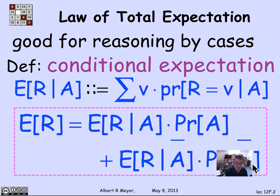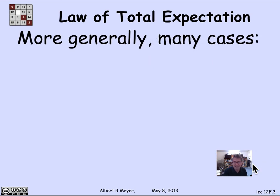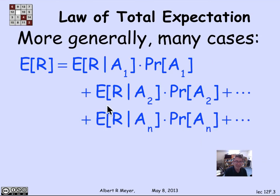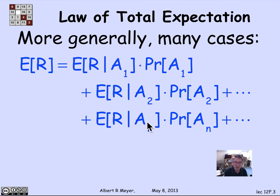It really looks the same format as the law of total probability. Of course, it generalizes to many cases. The general form says that I can calculate the expectation of r by breaking it up into the case that a1 holds times the probability of a1, the case that a2 holds times the probability of a2, through an.